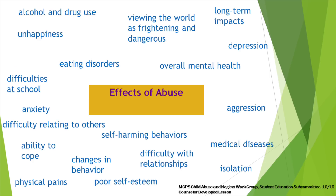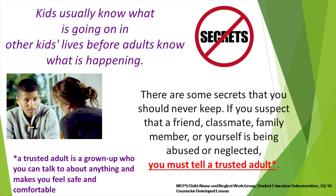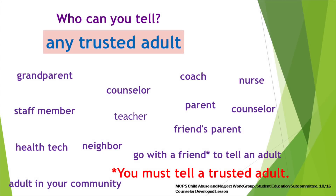Kids are often the first people to know when something is going on with a friend or classmate. Secrets about abuse are secrets you should never, ever keep. If you suspect a friend or classmate is being abused or neglected, you must tell a trusted adult. So, who is a trusted adult? Who can you tell?